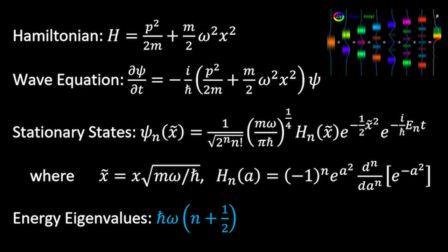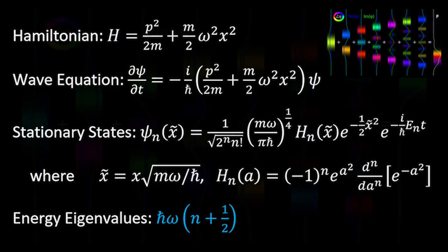And note that even in the ground state, the particle's energy is non-zero. Even when n equals zero, the particle's energy is h bar omega over two, you get that zero point energy. So that's another sort of quantum result is that the ground state still has energy.